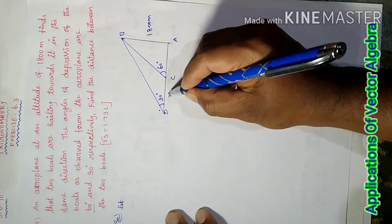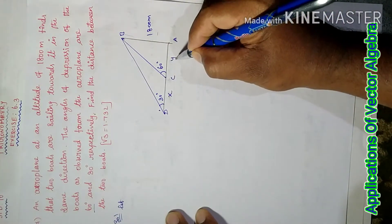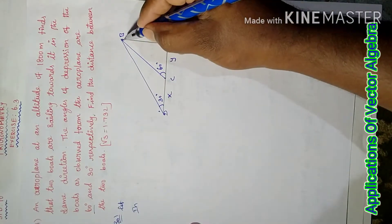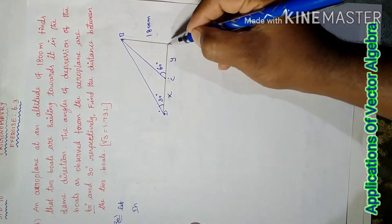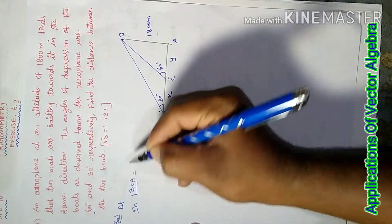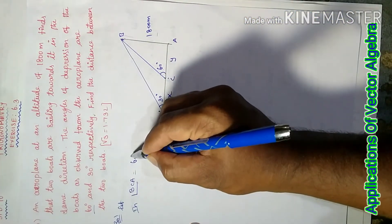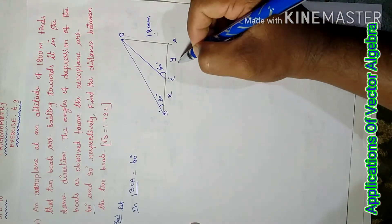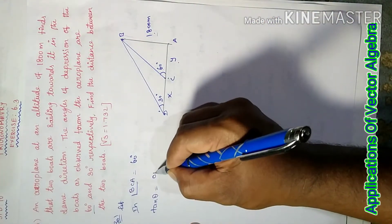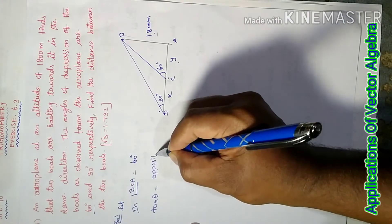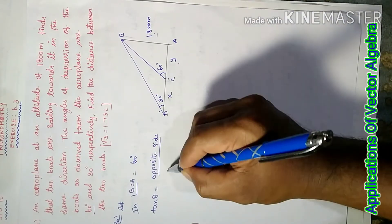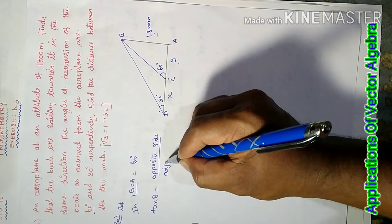Let the distance BC equal x and BD equal y. First triangle: angle BCA equals theta = 60 degrees. Using the formula tan theta equals opposite side over adjacent side, therefore tan 60 degrees equals opposite side 1800 over adjacent side y.